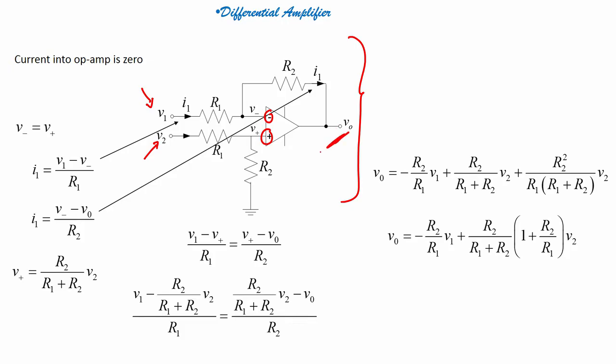First, I have to find the output voltage Vo — the relation between R2, R1, V1, and V2 with respect to Vo.